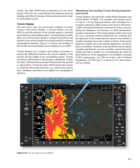Terrain display: the most basic type of terrain system — not necessarily certified — is the terrain display. A terrain display uses the MFD to plot the position of the aircraft against a pictorial presentation of surrounding terrain. A terrain display usually relies on a GPS location signal to compare the position and altitude of the aircraft against the terrain found in an internal topographical database. Terrain displays use a simple color-coding convention: terrain more than 1,000 feet below the aircraft is coded black; terrain less than 1,000 feet but more than 100 feet below is coded yellow; terrain less than 100 feet below is coded red. Man-made obstacles — radio towers, power lines, buildings — generally do not appear in a topographical database.